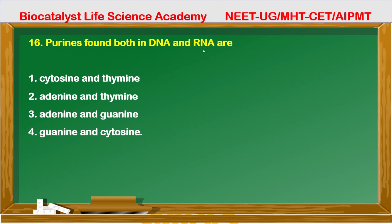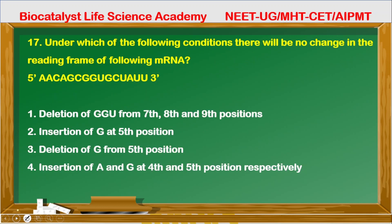Question 16: Purines found in both DNA and RNA are? Cytosine and thymine are not purines — they are pyrimidines. Adenine and thymine — incorrect. Adenine and guanine — both are purines and are found in both DNA and RNA. Guanine and cytosine — incorrect. RNA has A, U, G, C and DNA has A, T, G, C. The correct option is third.